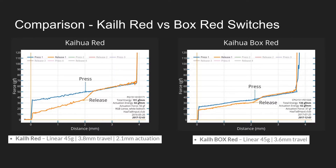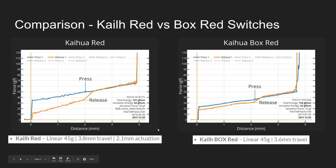Now let's start by comparing two similar switches: the Kale Reds and the Kale Box Reds. On the bottom you can see they're both linear 45 gram switches, where the main difference is travel distance — the Kale Red travels 3.8 millimeters and the Box Red travels 3.6. But more is actually true than just that. While they're both rated at 45 grams, look at where they actuate: for the Kale Reds they actuate at around 50 grams, while for the Box Reds they actuate at less than 40 grams — looking about 37 to 38 grams. So while they're both 45 gram switches, they provide a much different typing experience.